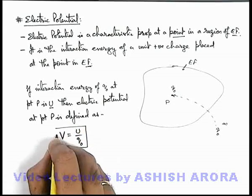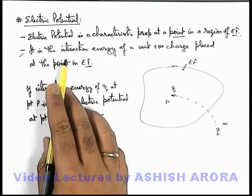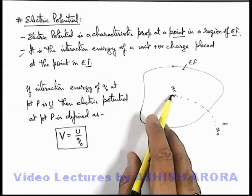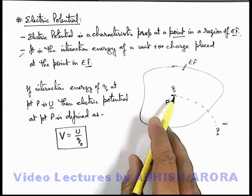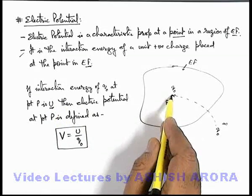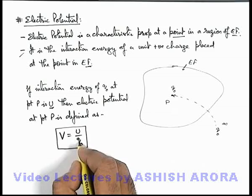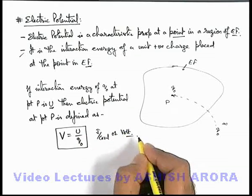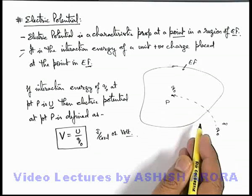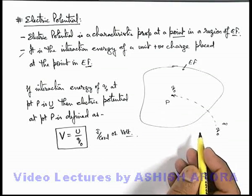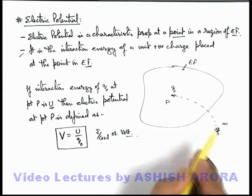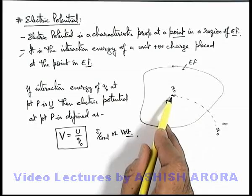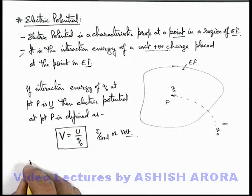This is a very important thing to be understood. As per the definition, electric potential is the interaction energy of a unit positive charge placed at a point in the electric field. So if q₀ is brought from infinity to P, then the work done in this process will be the interaction energy of charge q₀, which is U. Then the interaction energy of a unit charge at point P is simply U/q₀. So its unit can be written as joule per coulomb, or it is written in volt as well.